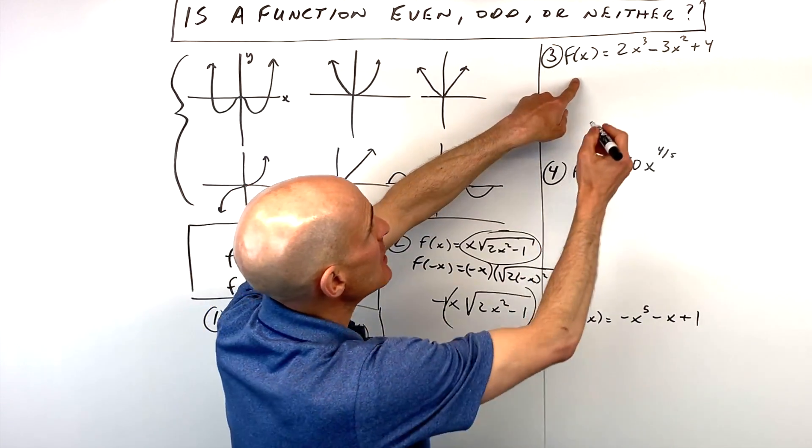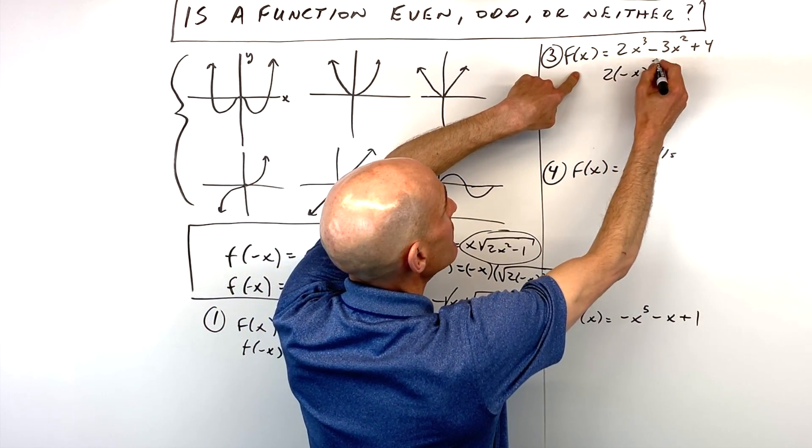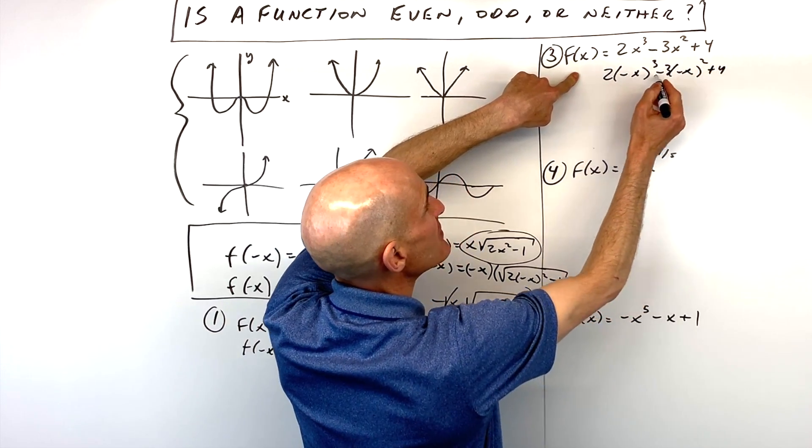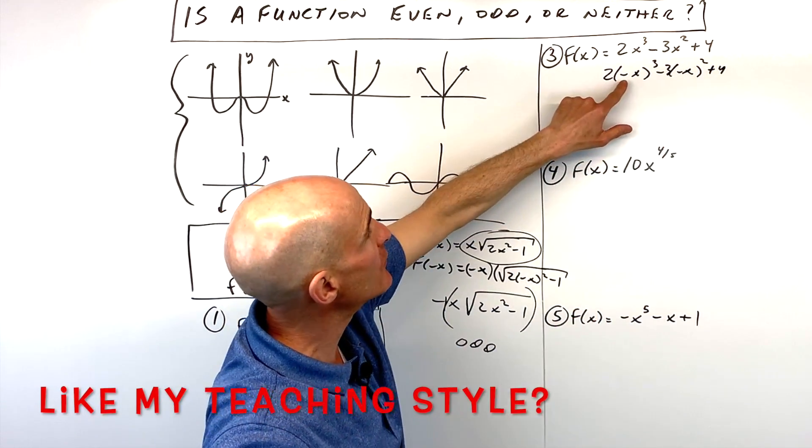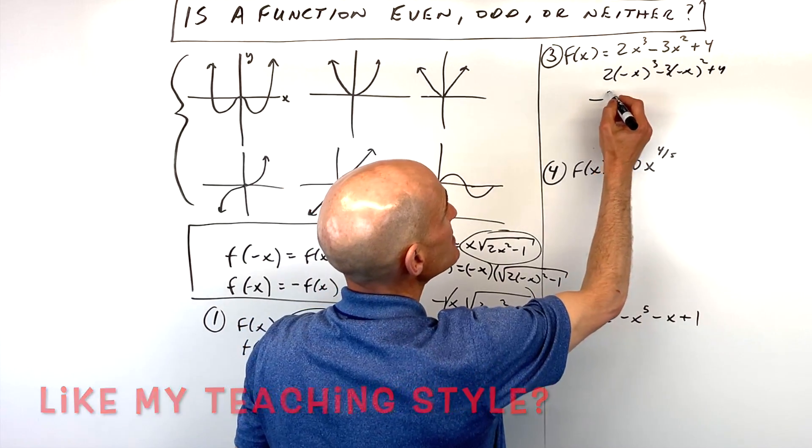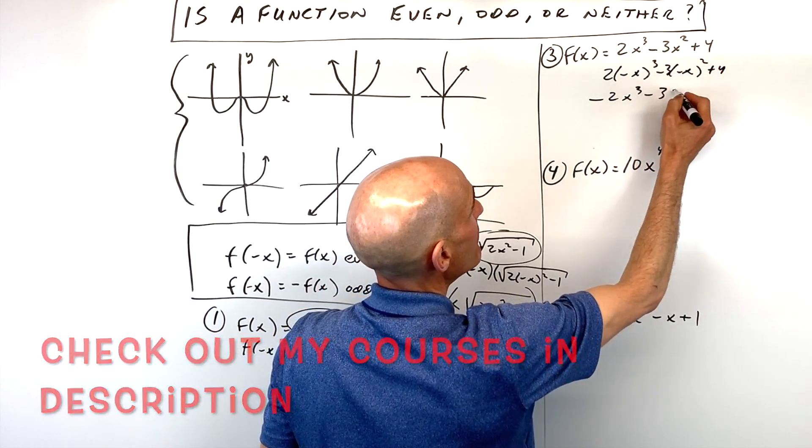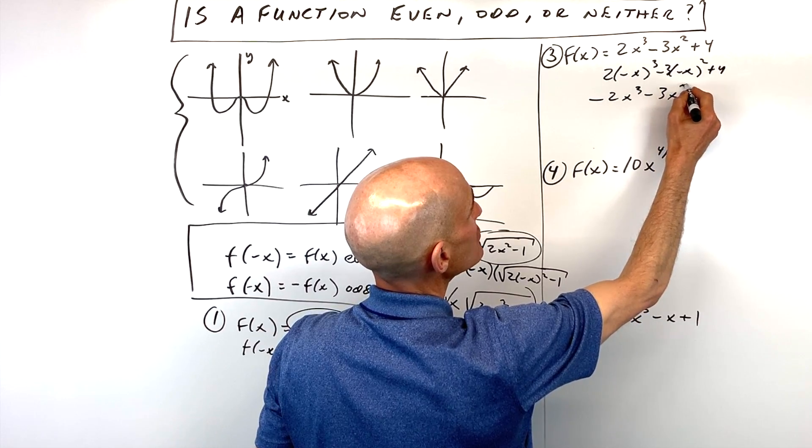Number 3, same idea. We're just going to replace x with negative x. Wherever you see that x, put in negative x. And the key is to put it in parentheses, so you take it as a group. But if you have a negative to an odd power, that's going to make it negative. If you have a negative to an even power, that's going to make this quantity positive. But then times negative 3, of course, is negative.